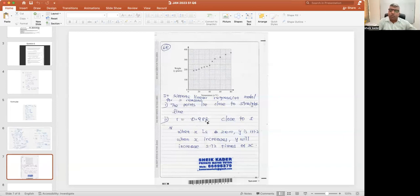Then the second is r equals 0.988, close to 1. So it supports linear regression model. When x is 0, y is 151.2. When x increases, y will increase 2.72 times of x.